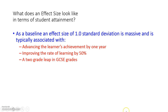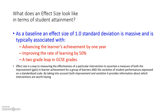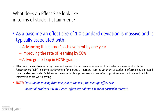What does an effect size look like? A standard deviation of 1.0 is massive — advancing learners' achievement by 1.0, improving the rate of learning, equivalent to two-grade leaps at GCSE. You can look at the technical definition in your own time. Even in one year, we would expect students to move up 0.40, so anything that we do that has an effect size over 0.40 is particularly interesting.